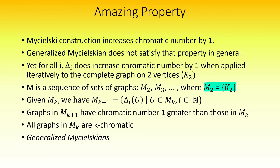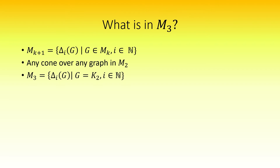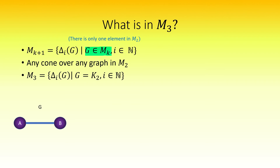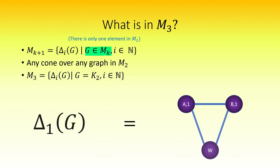To clarify the idea of the sequence of sets of graphs, let's look at what graphs make up the set m sub 3, the second set in our sequence. According to our rule, we'll need to take any cone over any graph in m sub 2 — that is, any cone over the complete graph on two vertices, since that's the only graph in m sub 2. So let's find delta sub 1 of g: take the tensor product of g with the looped path graph on two vertices, then collapse the non-loop associated vertices into the super vertex w. This is a cycle graph with three vertices.